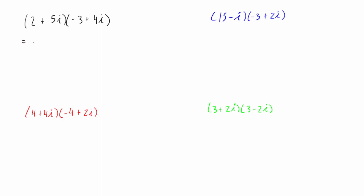We can just follow the distribution of each of these terms across the brackets. We have 2 times negative 3 is equal to negative 6, plus 2 times 4i, which is 8i. We have 5i times negative 3, so that is going to be minus 15i. And then 5i times 4i is plus 20i squared.